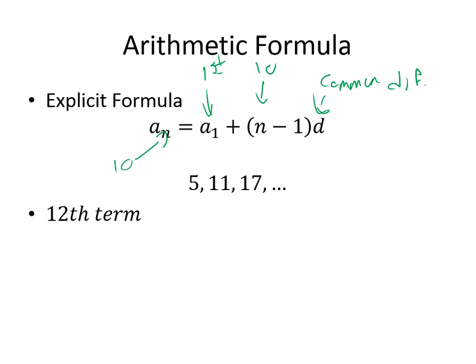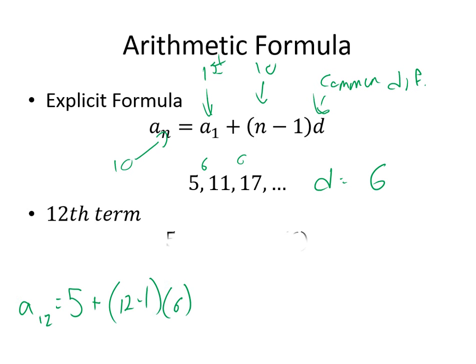So if we look at this sequence — 5, 11, 17 — first we check: is it arithmetic? It's add 6, add 6, so our D would be positive 6. If we want to find the 12th term, we go A(12) equals the first term, 5, plus (12 minus 1) times 6.